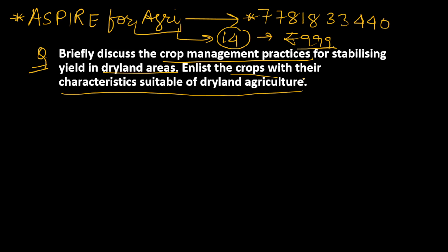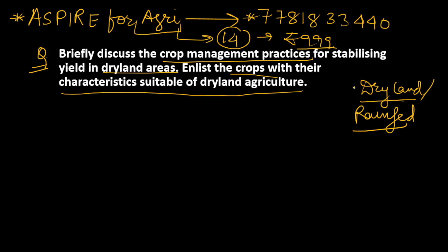A lot of questions have been asked previously regarding dryland and rainfed areas. Dryland and rainfed are both similar types of farming, and every year you will find a question on one of the two — either dryland agriculture or rainfed agriculture. So you should know this topic very properly.